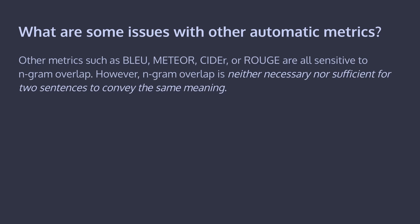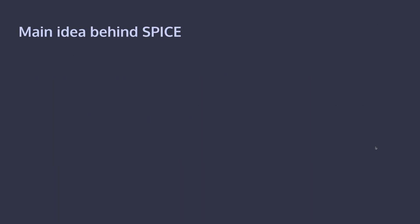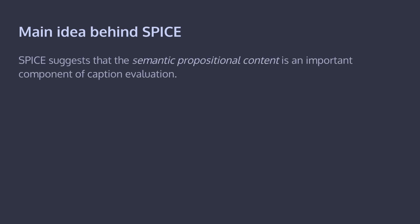Other metrics such as BLEU, METEOR, CIDEr, or ROUGE are all sensitive to n-gram overlap. N-gram overlap is neither necessary nor sufficient for two sentences to convey the same meaning. To illustrate the limitations of n-gram comparisons, consider captions from the MS-COCO dataset: 'a young girl standing on top of a tennis court' and 'a giraffe standing on top of a green field' — these two captions have five words that overlap but convey completely different messages and should not be considered similar. However, using n-gram techniques, these two captions are actually considered very similar.